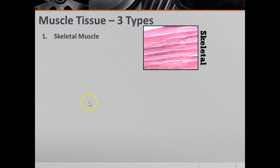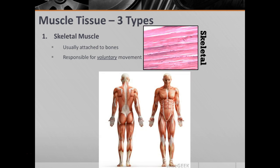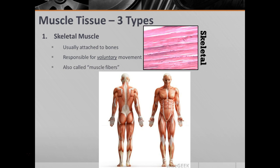You have skeletal muscle, which kind of looks like this. You can see the long, thin strands. This stuff is usually going to be attached to bones. When you think of muscle, you're probably thinking of skeletal muscle. This is what is responsible for all voluntary movements — when you want to raise your hand, that was skeletal muscle. So if you're talking about muscle fibers, you're probably referring to skeletal muscle.